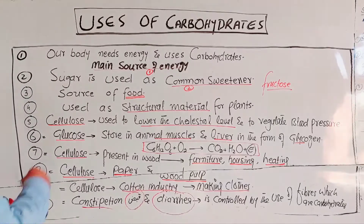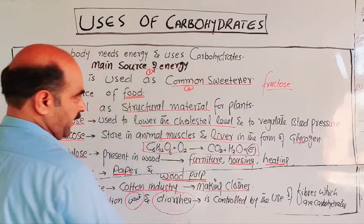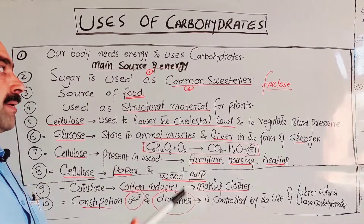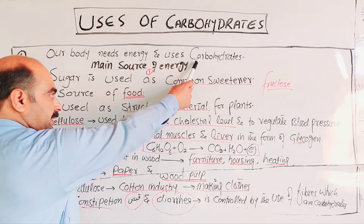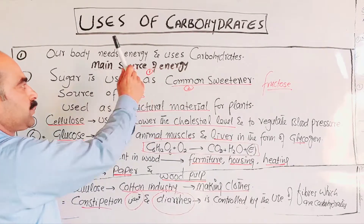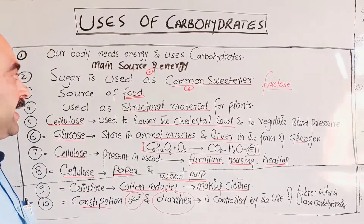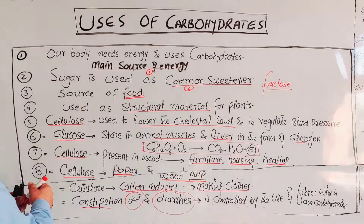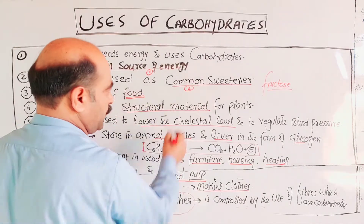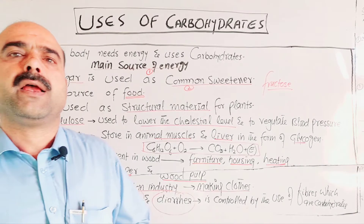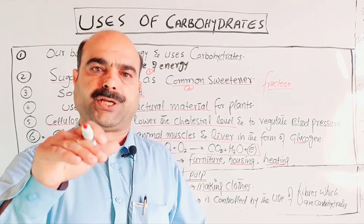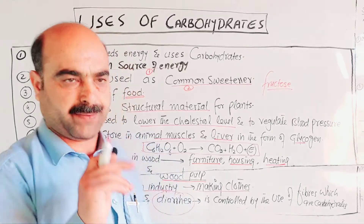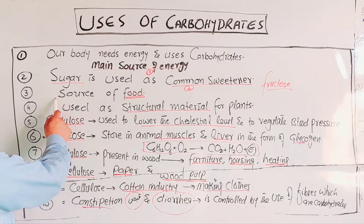Our body needs energy and uses carbohydrates for energy production. So carbohydrate is the main source of energy. The second use: sucrose, which is a disaccharide, is used as a common sweetener.